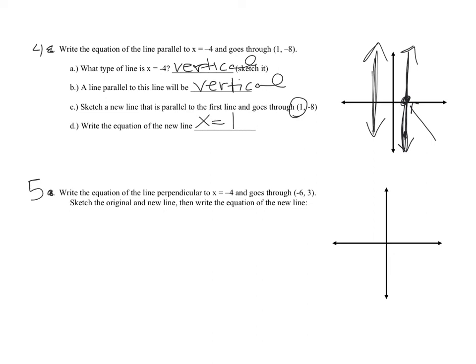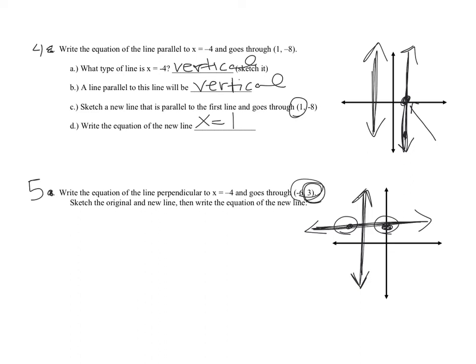Write the equation of a line perpendicular to x equals negative 4 going through (negative 6, 3). Since x equals negative 4 is a vertical line, something perpendicular to it is a horizontal line. The point (negative 6, 3) has a y-value of 3, so the horizontal line's equation is y equals 3.